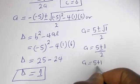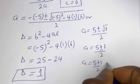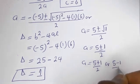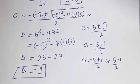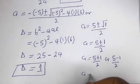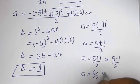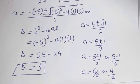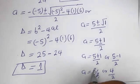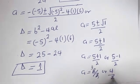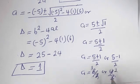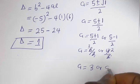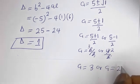So a is equal to (5 plus 1) over 2 or (5 minus 1) over 2, giving a is equal to 6 over 2 or 4 over 2. Therefore a is equal to 3 or a is equal to 2.